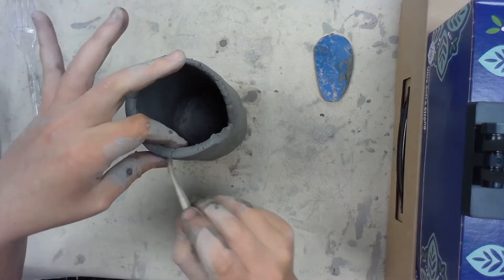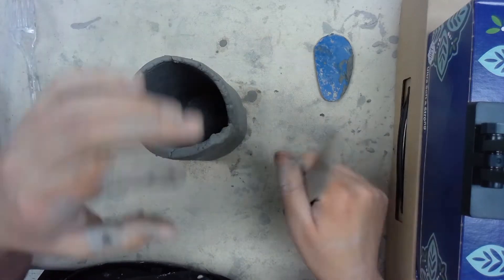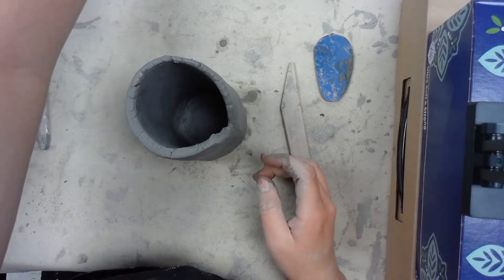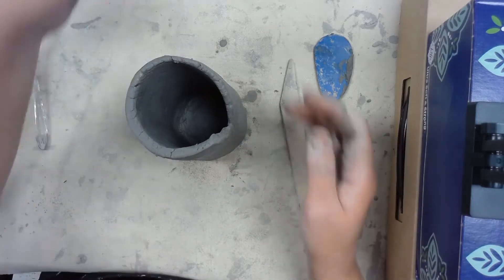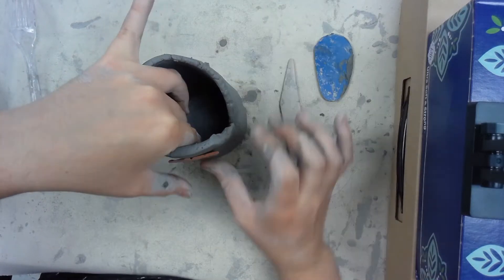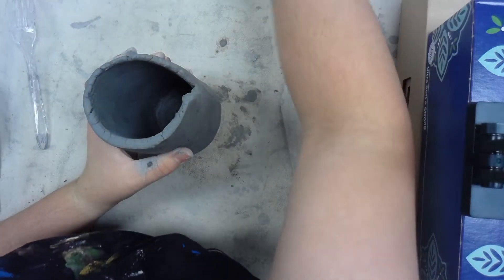That's how you make the basic form of your mug. At this point you could use molds, say you want to use this one, and you could press it into the clay and make different textures. That one didn't work very well, let me pick a different one.